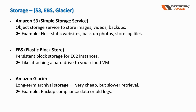Storage is a very vast field in AWS. Here we are covering three services: S3, EBS, and Glacier. S3, or Simple Storage Service, is storage over the internet — available just like Google Drive or OneDrive. It is an object storage service used to store images, videos, and backups. You can also host a static website without using any EC2 instances. S3 supports cross-region replication and integrates with almost every AWS service.